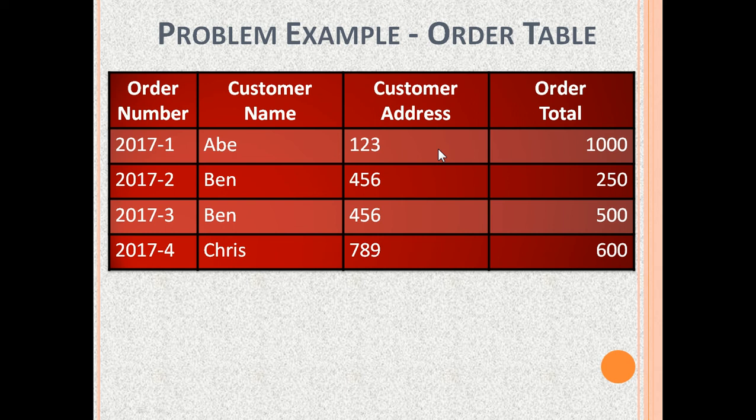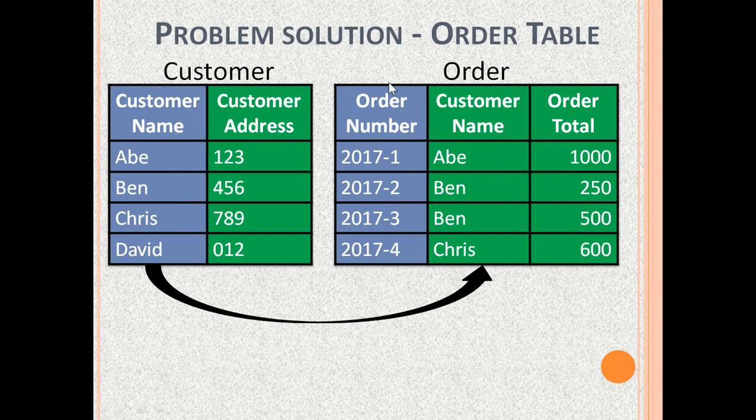This gives rise to issues. For example, if a CustomerAddress changes, some rows may be updated with the new address and other rows may still have the old address. To convert the OrderTable to 2NF, it needs to be broken into two tables.